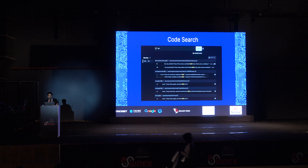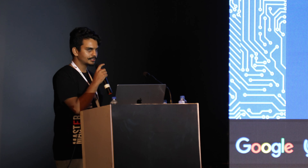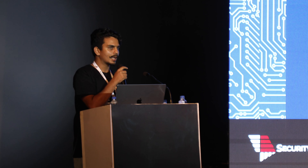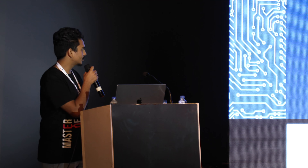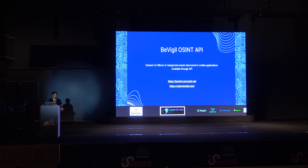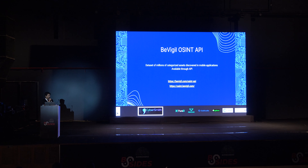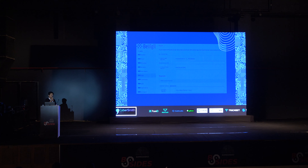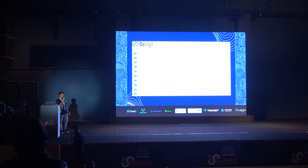Thank you, Sparsh. I'll be taking over the presentation from now. As you just saw, code search is one way to access this data. Another way is through the B-Vigil OSINT API, which gives you access to millions of organized assets. It's publicly and freely available for everyone to use. More details about the API can be found in the links mentioned here. Now let's look at some of the endpoints offered by the B-Vigil OSINT API.